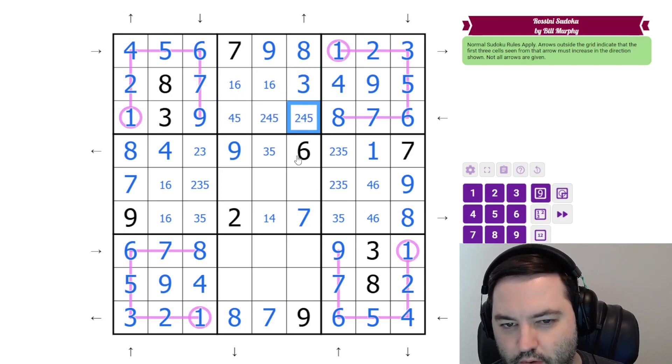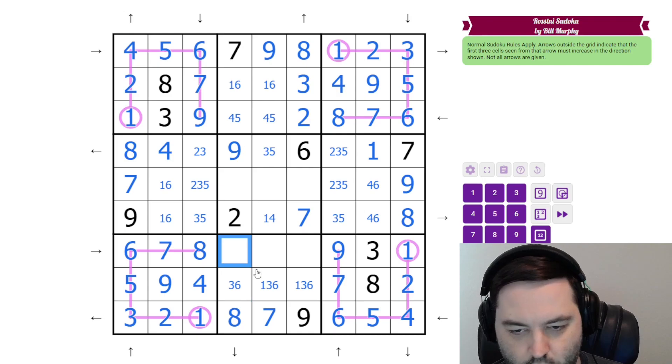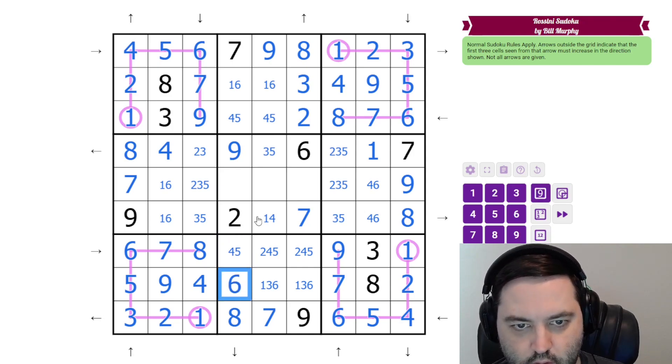And, again, we're increasing going this way. The only thing less than three here is two. These are one, three, six. This can't be one because this time we're going this way. These are two, four, five. This is not two. And since this has to be bigger than four or five, it is six. And that's going to resolve one and six up here. The three resolves one and three.